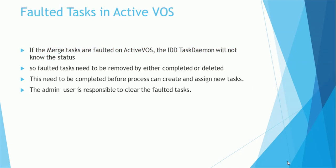Faulted tasks in ActiveOS: there may be cases where tasks end up in faulted status. If merge tasks are faulted in ActiveOS, the IDD task statement will not know the status of that corresponding task, so IDD will just display it as an active task. Faulted tasks need to be removed by either marking them as completed or by deleting them. This must be completed before the process can create and assign new tasks. The admin user is responsible for clearing or deleting the faulted tasks — we will see that deletion or faulting process in an upcoming session.